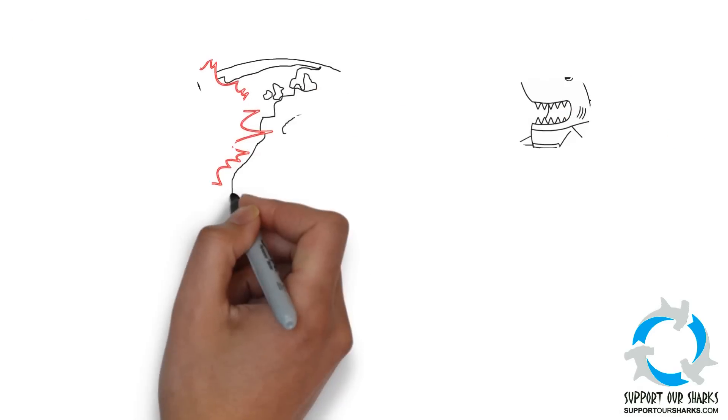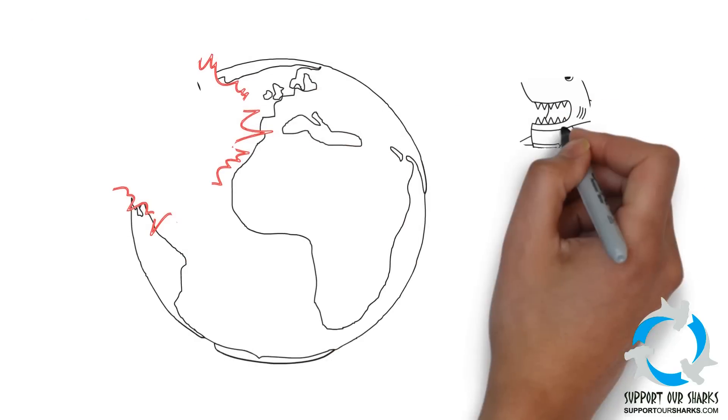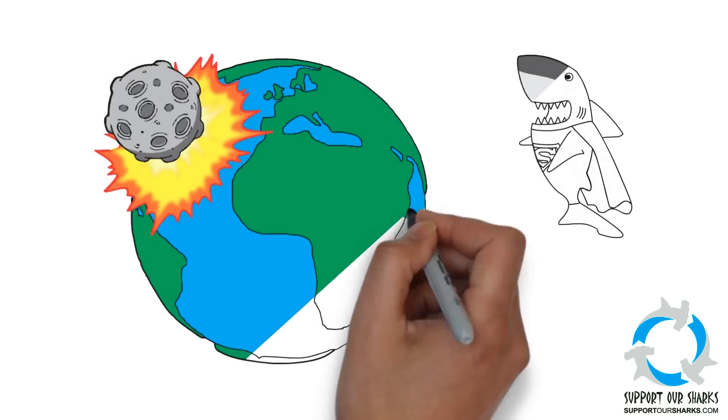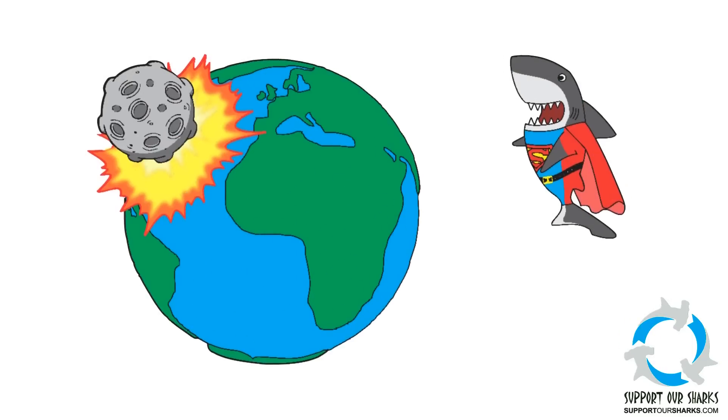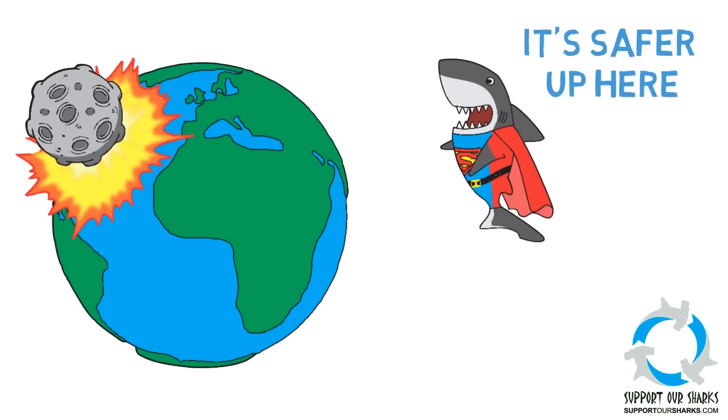Over their 400 million year history, sharks have survived 5 major mass extinction events. In the worst such event, 251 million years ago, as many as 95% of the species on the planet were killed, possibly due to a comet impact.